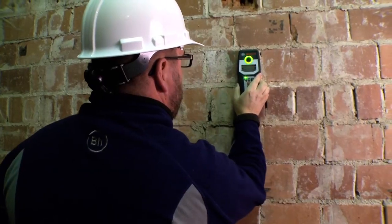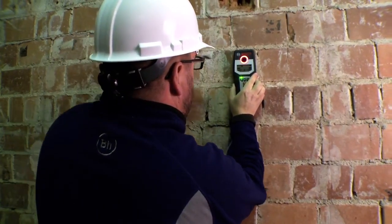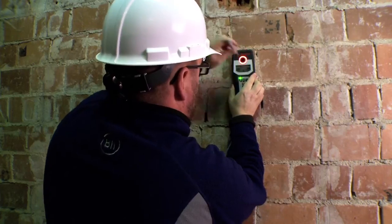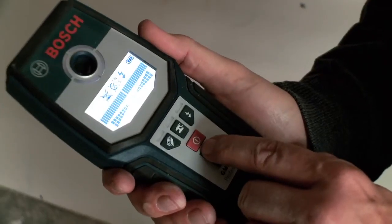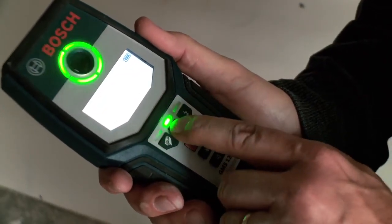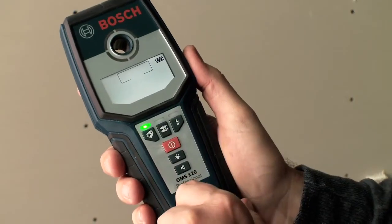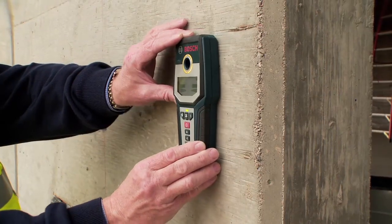The tool pinpoints the center of the object and has a convenient marking hole for leaving reference marks. The easy-to-view LED screen shows more detailed information, such as mode of operation, strength of signal, and type of material found.